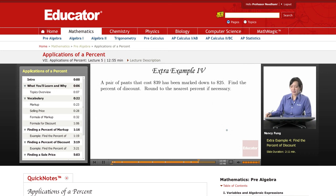A pair of pants that cost $39 has been marked down to $25. Find the percent of discount. Round to the nearest percent if necessary.